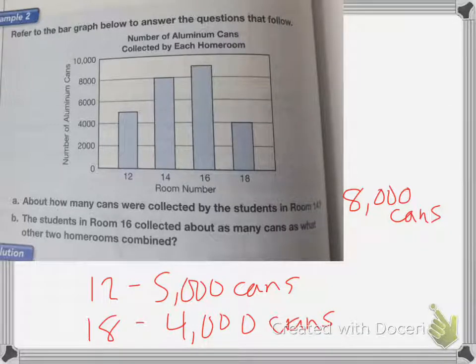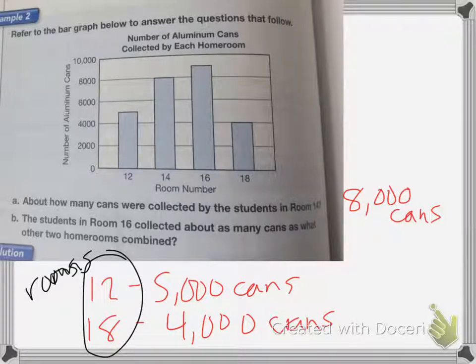So rooms 12 and 18 are the two rooms that, when combined, got as many cans as room 16.